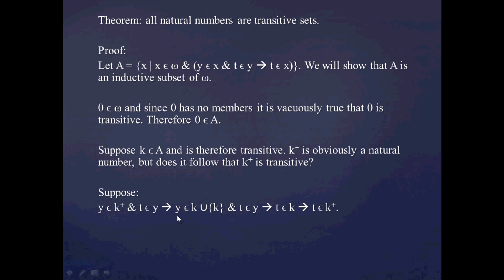So far in our deduction, we have this proposition. Now let's analyze this: Y is in K union the set containing K. Just by the meaning of union, that implies that either Y is in the set K, or Y is identical to K.